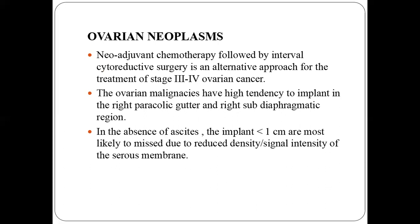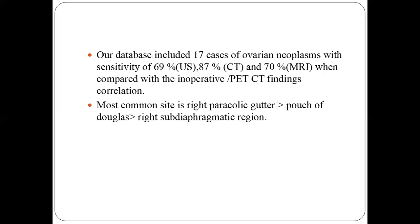Ovarian neoplasms have a high tendency to implant in the right paracolic gutter and the right subdiaphragmatic region. Deposits under one centimeter are likely to be missed due to their density. In our database, 17 cases of ovarian neoplasm formed the majority, with a sensitivity of 69% on ultrasound, 87% on CT, and 70% on MRI when compared with PET-CT or exploratory laparotomy.